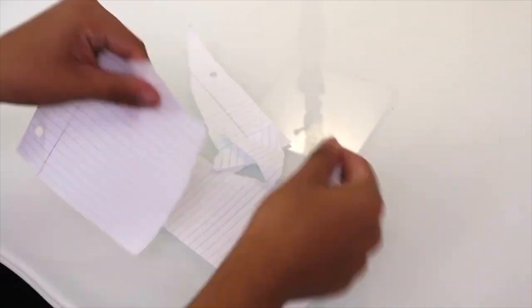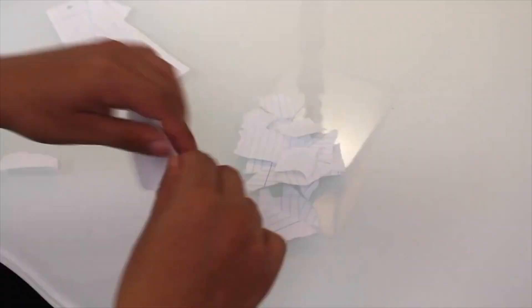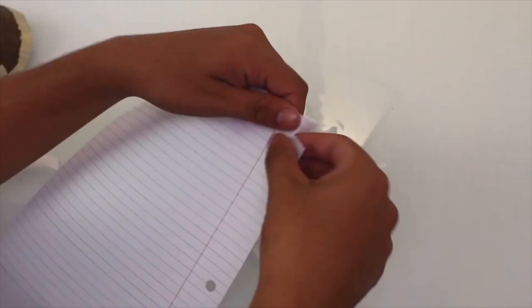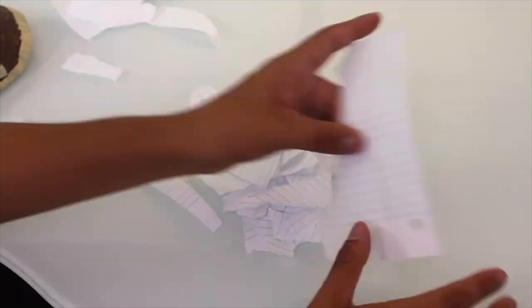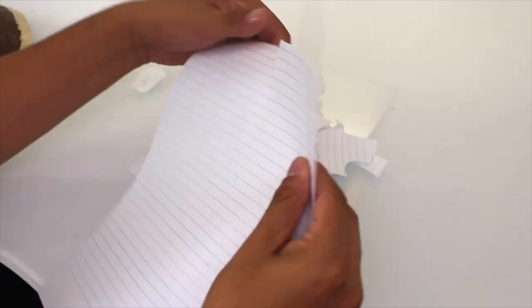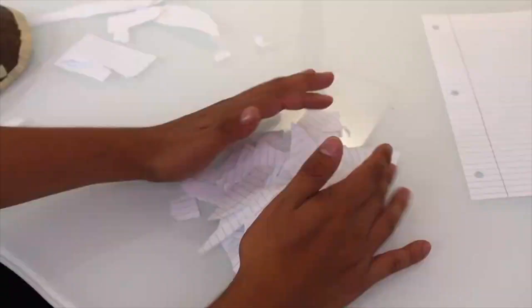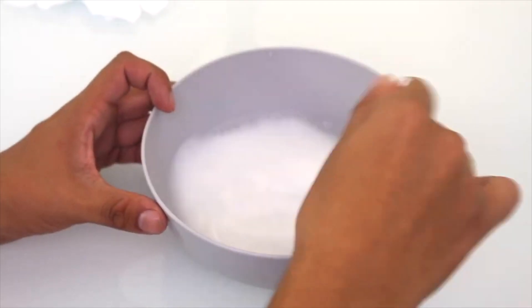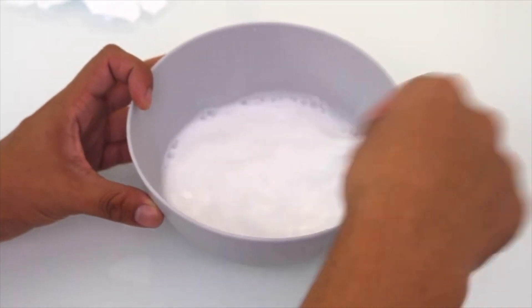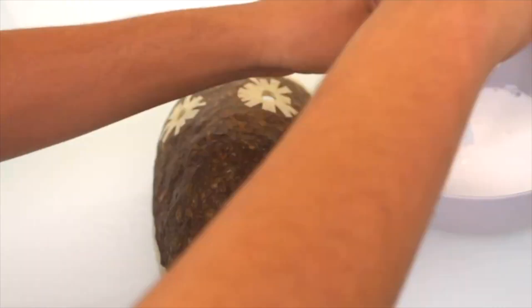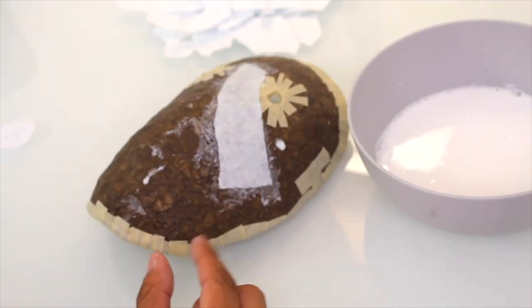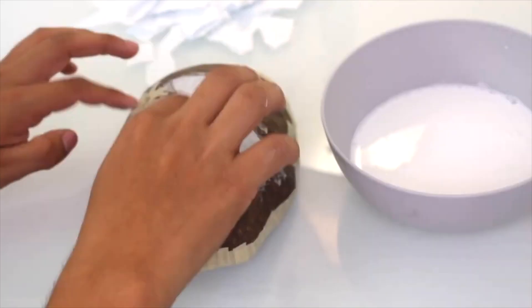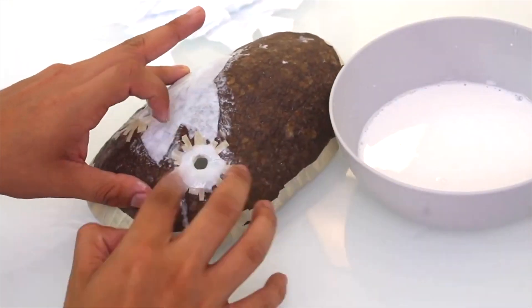So now take your paper and tear that up into small pieces. You will need enough to cover the whole mask. Now take one part glue and one part water and mix it up in a bowl. Then dip a part of the paper in and lay it down on the Legion mask. Repeat until the whole mask is covered.